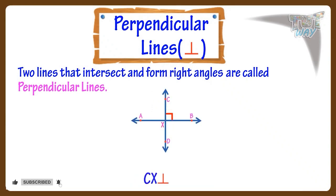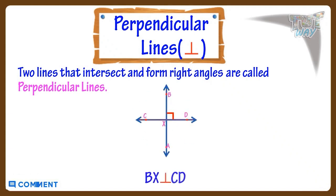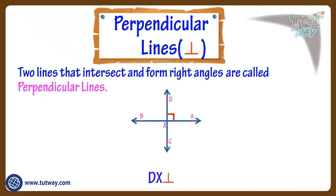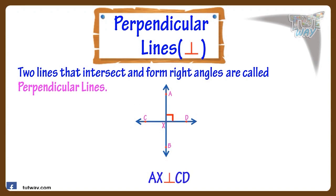Let's see more perpendicular lines. Here line CX is perpendicular to line AB. Here line BX is perpendicular to line CD. Here line DX is perpendicular to line BA. Here line AX is perpendicular to line CD.